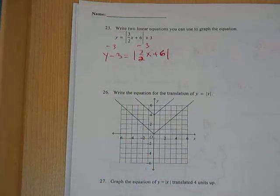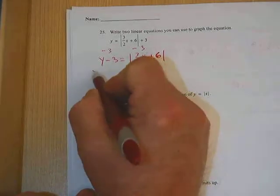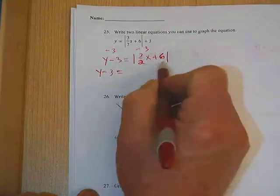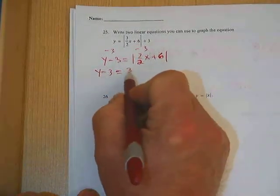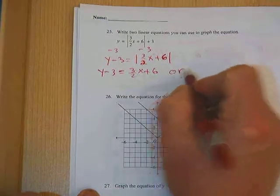So now we have y minus 3 equals the absolute value of 3 halves x plus 6. Now just like the other problem, that means that y minus 3 equals exactly what's in here, 3 halves x plus 6.